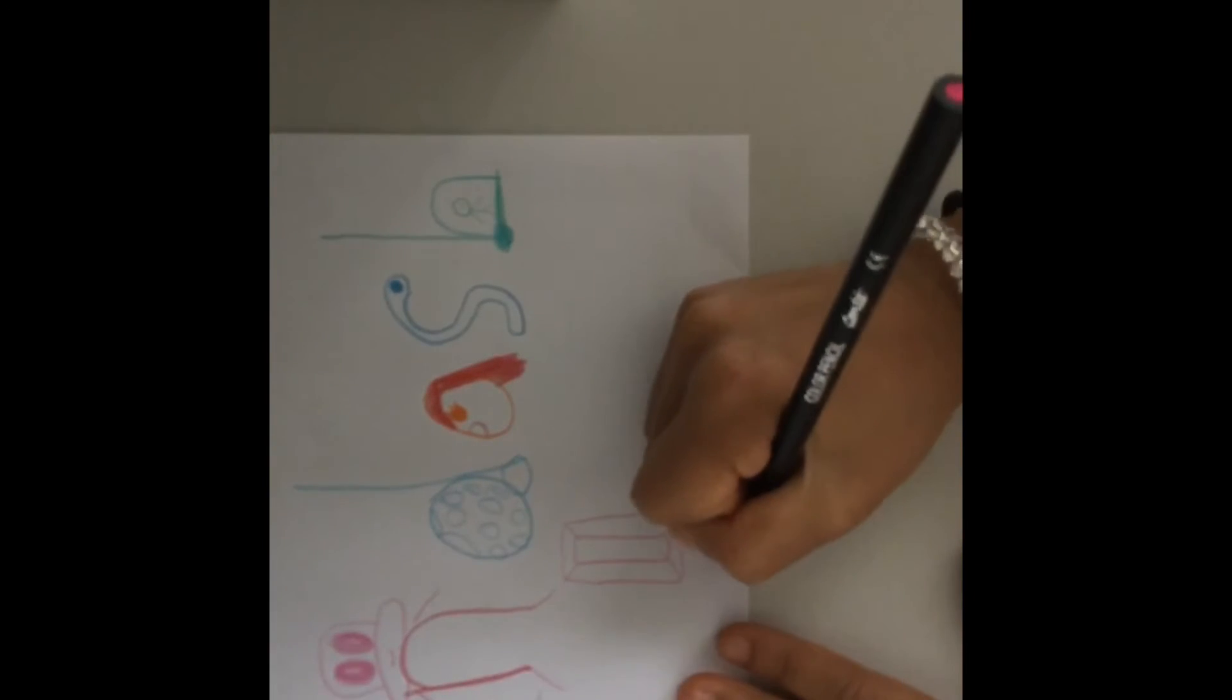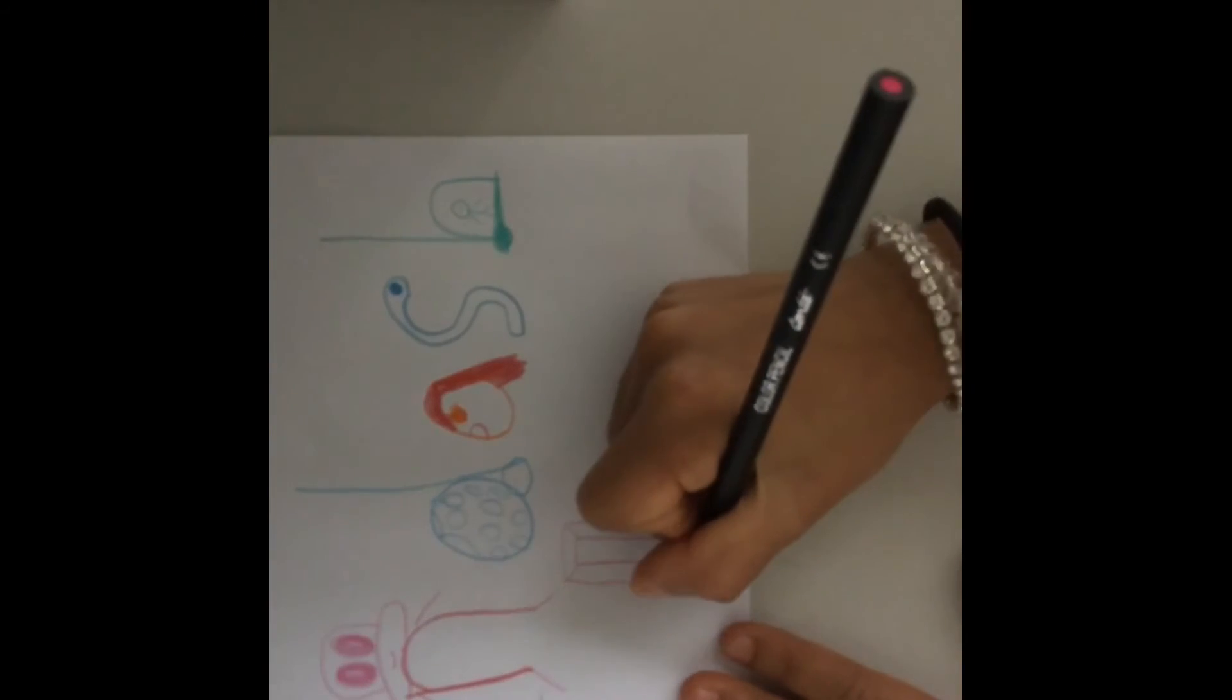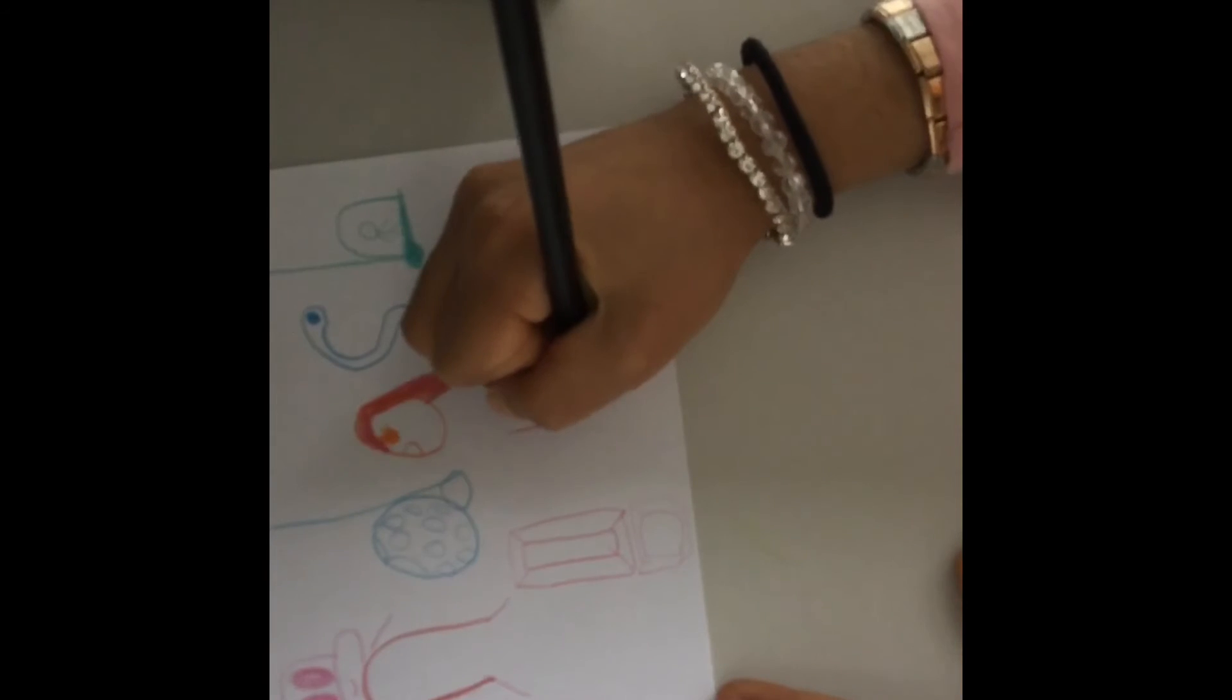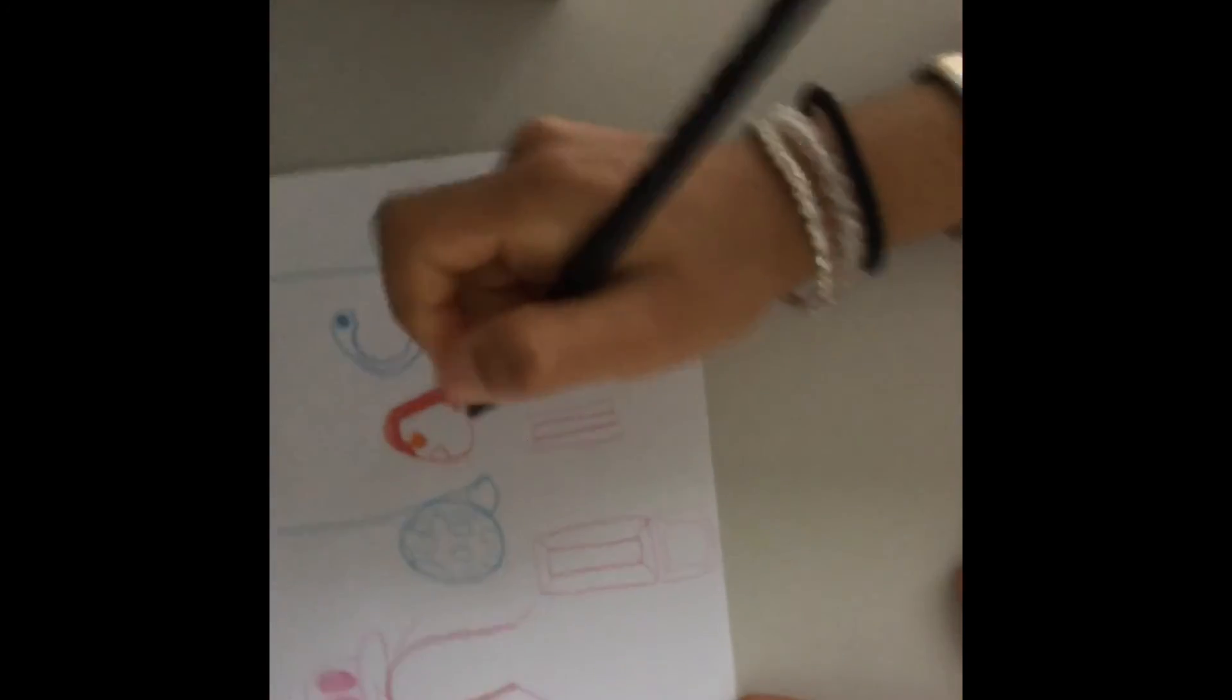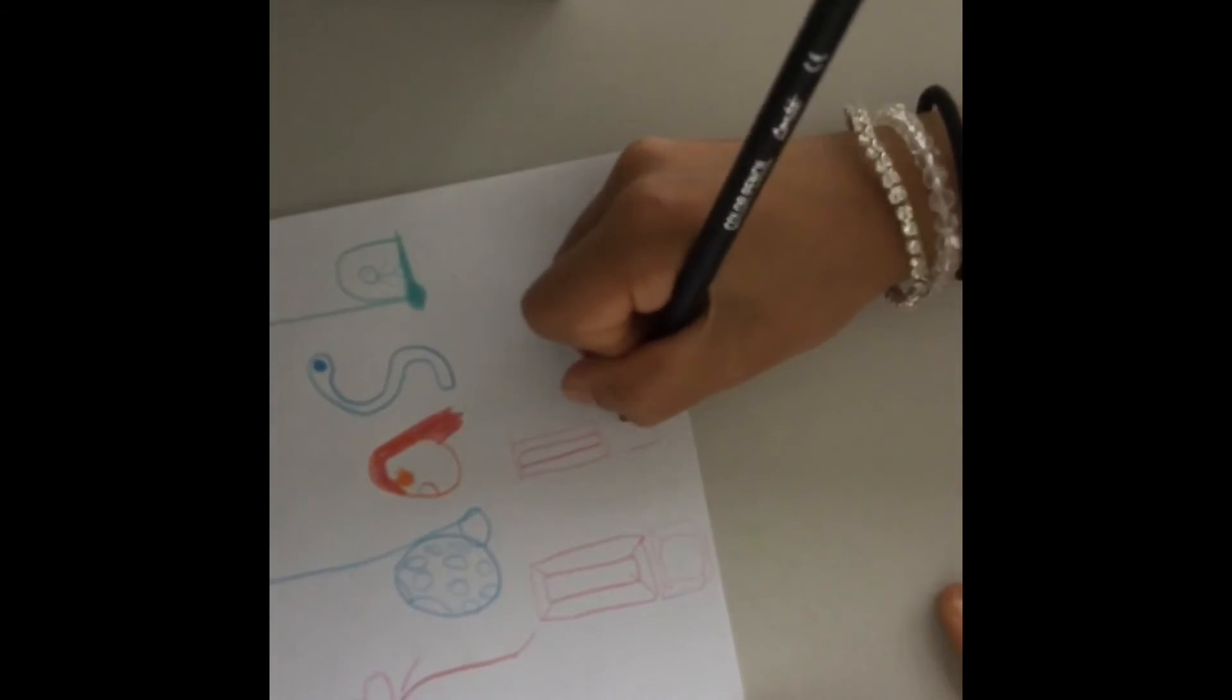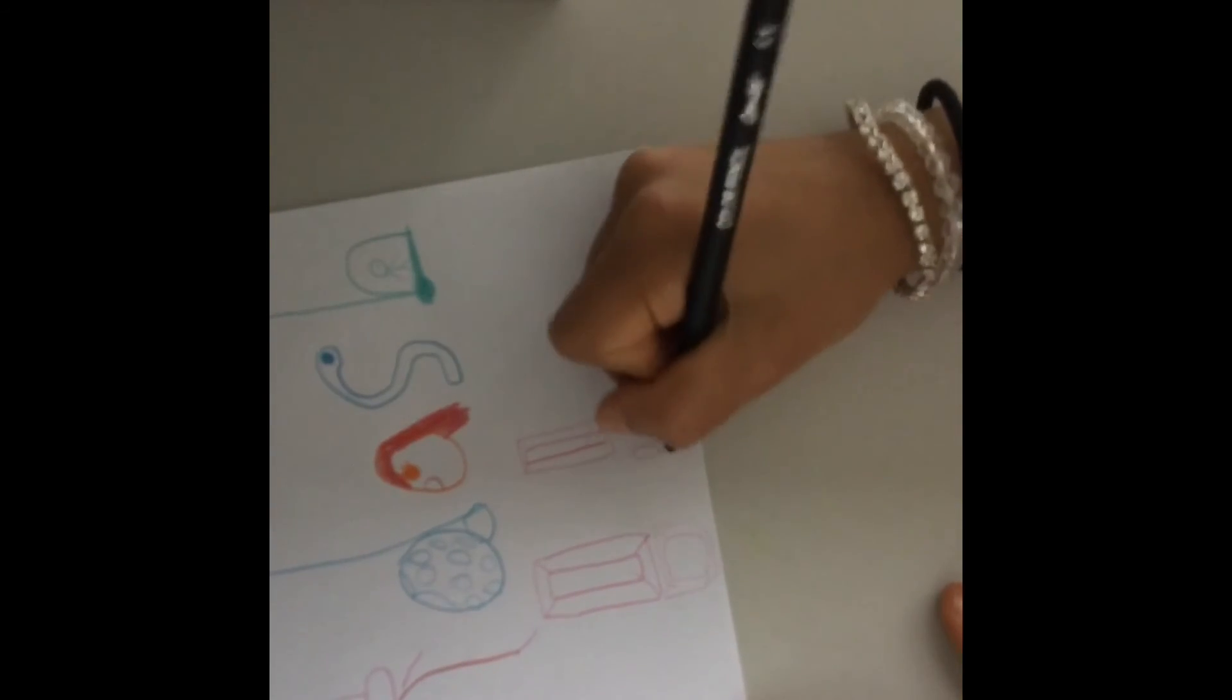And then do a square the same like you did in the thin rectangle. Let's draw a thin one here.